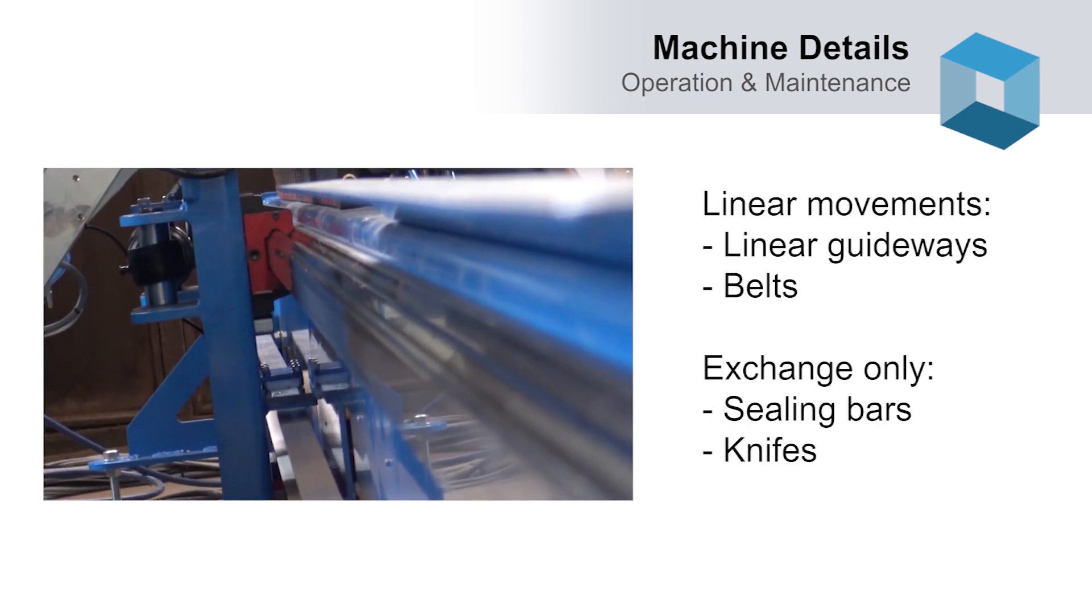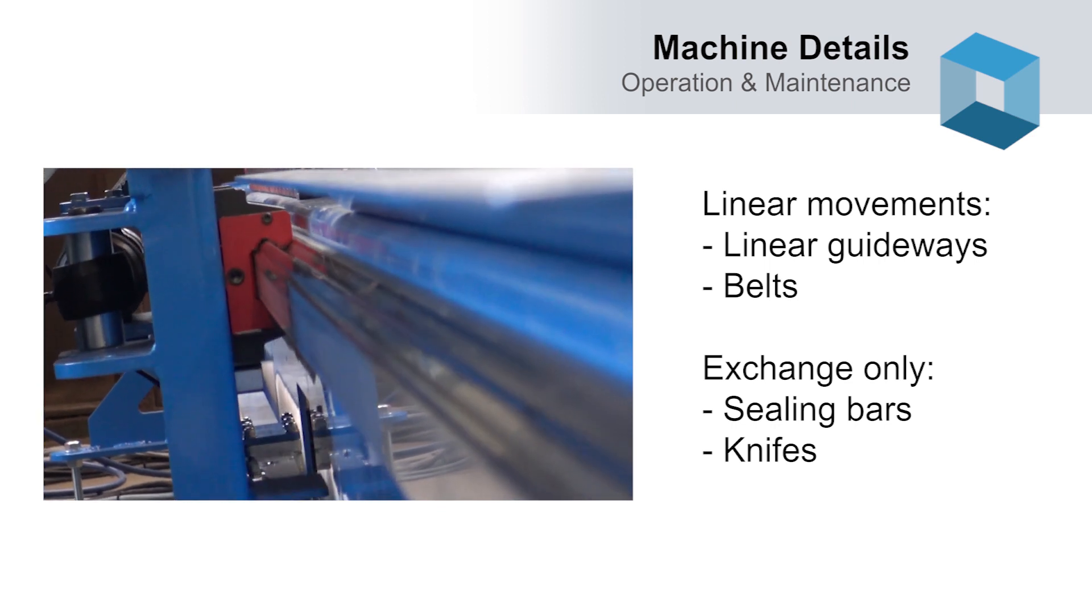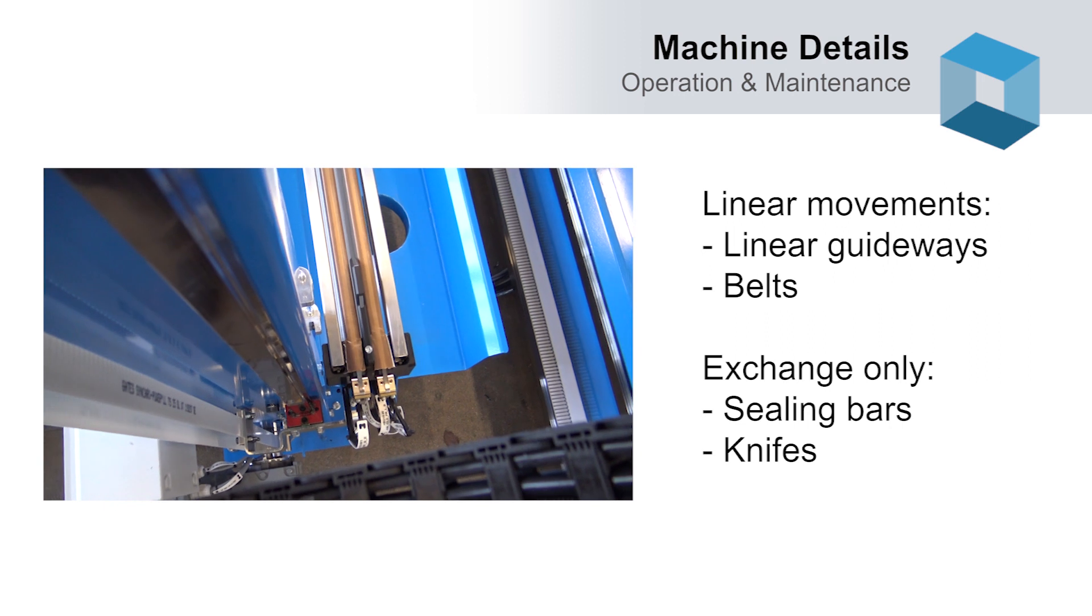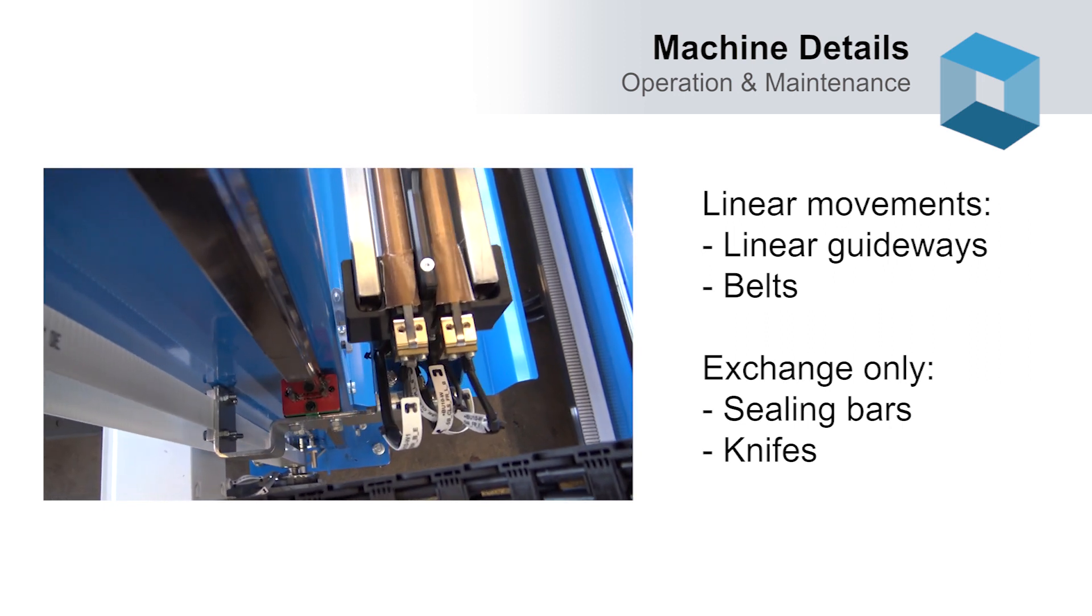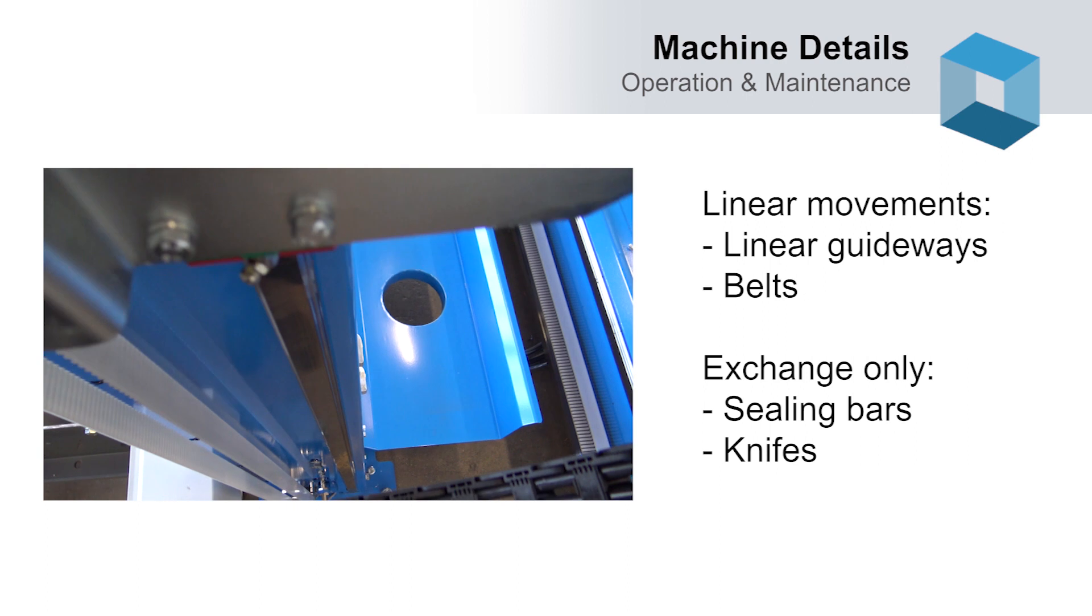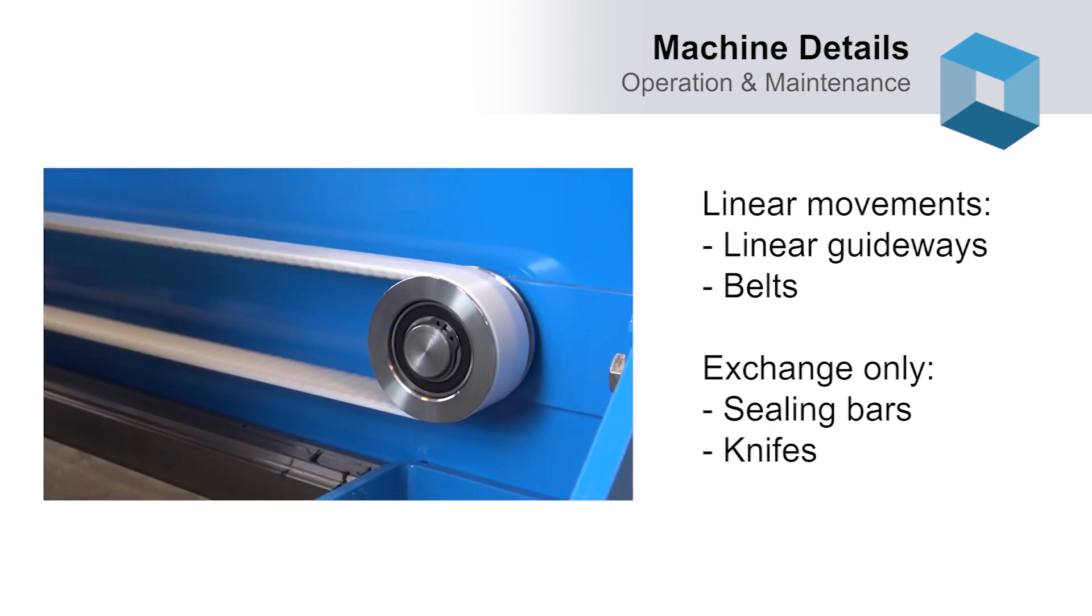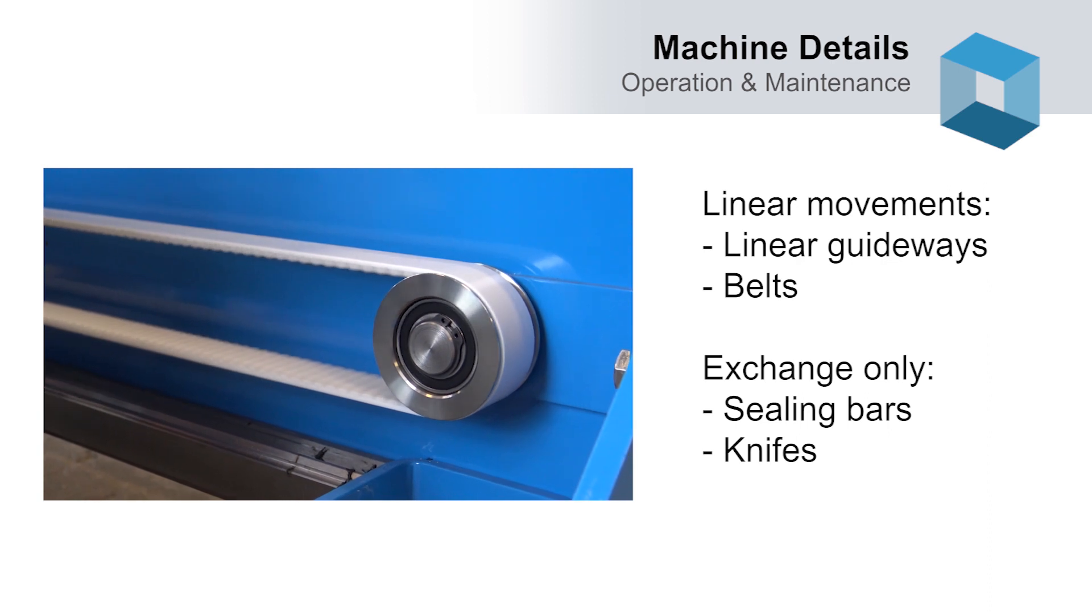Tentoma machines are designed by people who come from the service industry, so only linear guideways are used for horizontal movements and vertical movements. There are no chains applied that need lubrication, calibration and so on. Only belts are applied.